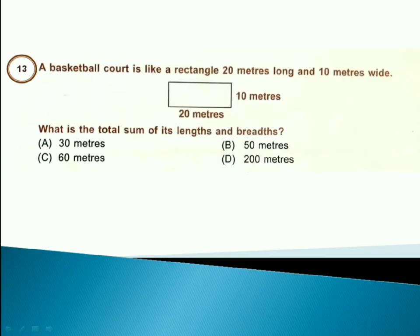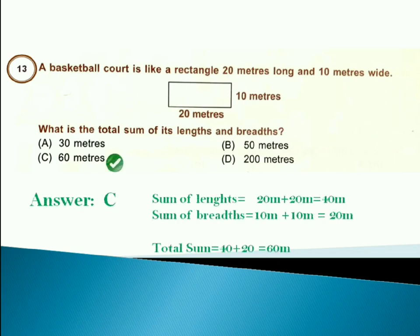A basketball court is like a rectangle 20 meters long and 10 meters wide. What is the total sum of its length and breadth? Answer is option C. Because sum of length is 20 plus 20 is 40 meters. Sum of breadth is 10 plus 10 is 20 meters. Total sum is 40 plus 20 is 60 meters.